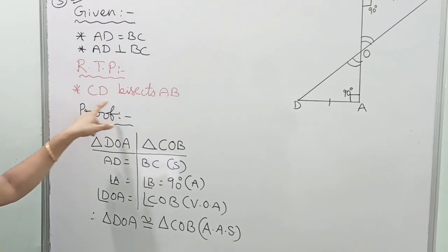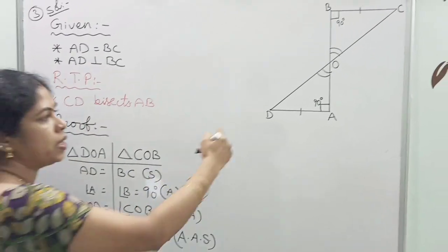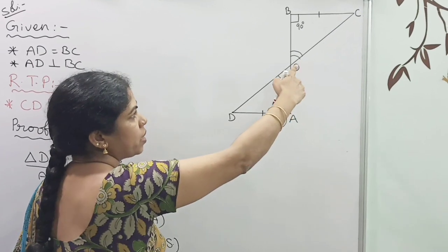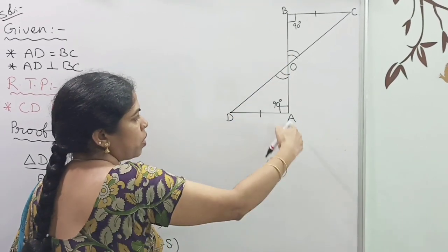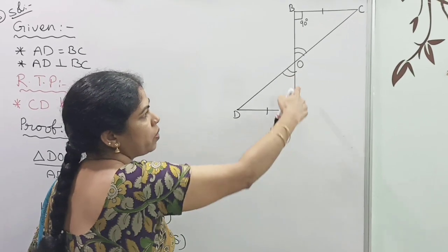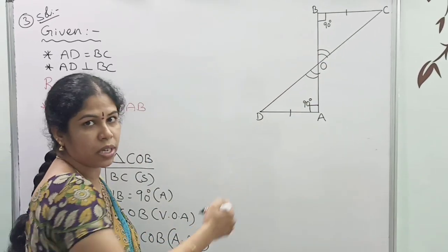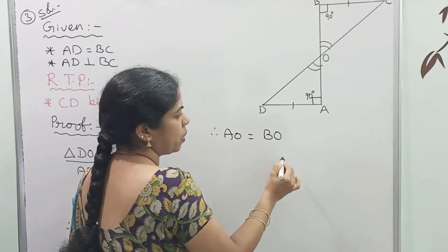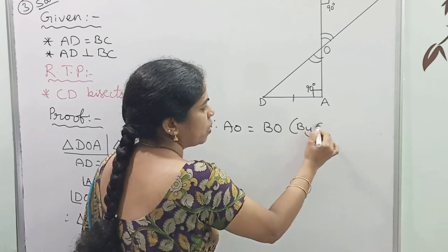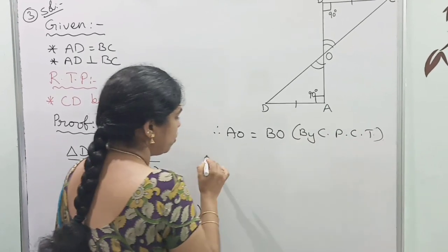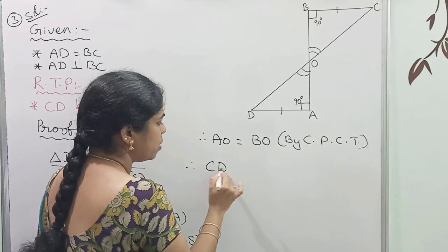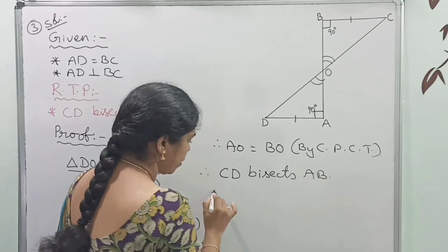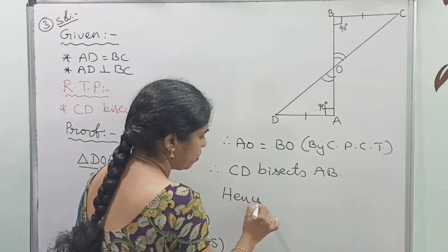They asked us to prove CD bisects AB. If CD bisects AB, then AO must equal BO. AO and BO are corresponding parts of the congruent triangles. Therefore AO is equal to BO by CPCT, and therefore CD bisects AB. Hence proved.